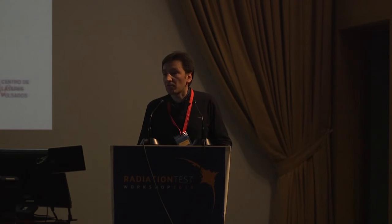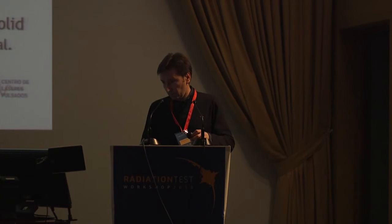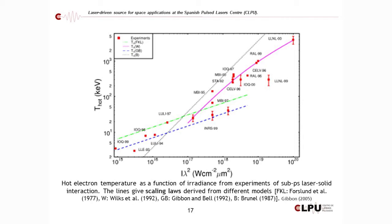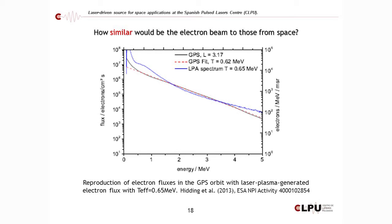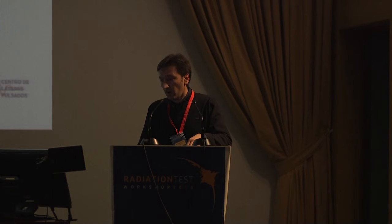This is a scaling law — the dots are real experimental data and the curves come from different models. One of the parameters of most interest is the intensity, expressed as I·λ². When we increase the intensity, the temperature of the electron distribution increases, so we can change the level of this curve and potentially match, for different orbits, the flux levels we need within the same energy range.